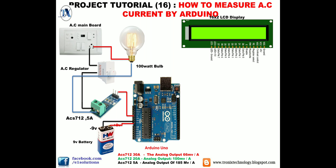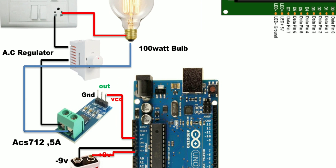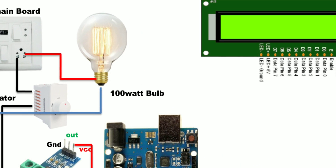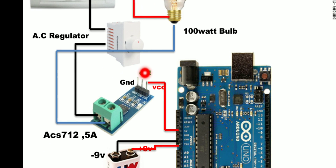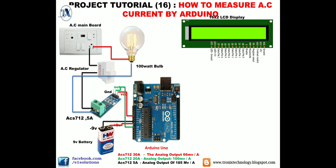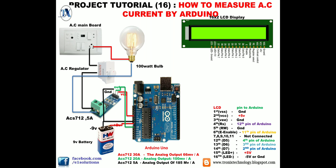Now I will define the pins of the ACS712 module. The first pin is VCC, the middle pin is the analog output, and the third pin is ground. It works on 5-volt DC. Connect the VCC with the 5-volt output of Arduino Uno, connect the analog output pin to A0 of Arduino Uno, and connect the ground of the ACS712 module with the ground of the battery.